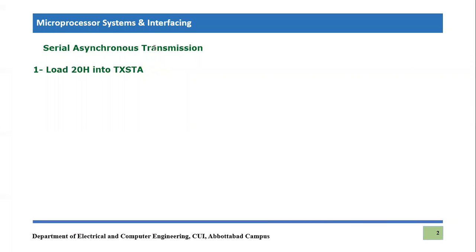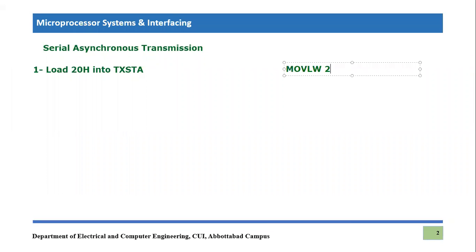The very first step of the transmitter code is loading the value 0x20 into the transmitter status and control register (TXSTA). We have already discussed this register, and we know that when we feed 0x20 into it, we are configuring serial asynchronous transmission for 8-bit transmission only — not considering any 9th bit or error rates. To do this, we move literal 0x20 into the working register and then move the working register into the transmitter status register.